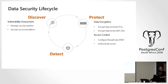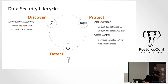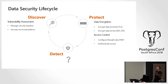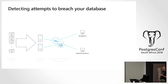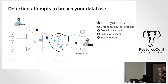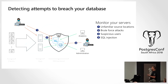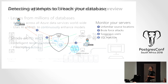The security lifecycle follows: discover, protect, detect. With ATP we're actively looking for people trying to breach your databases — unfamiliar source locations, brute force attacks, suspicious users, SQL injection, cross-site scripting, and more. We provide all of that to you as alerts.